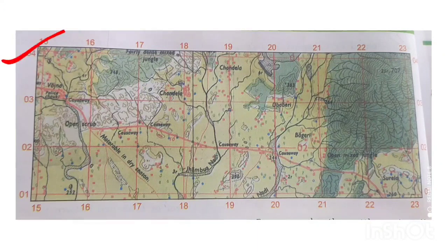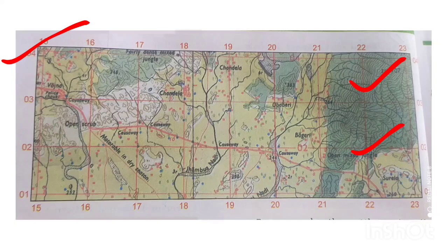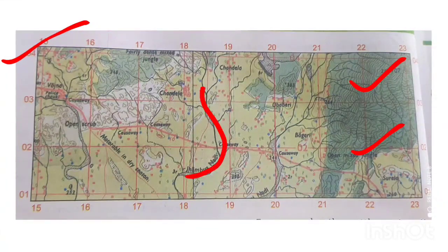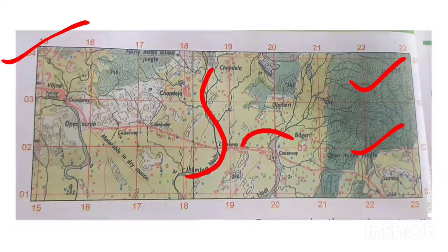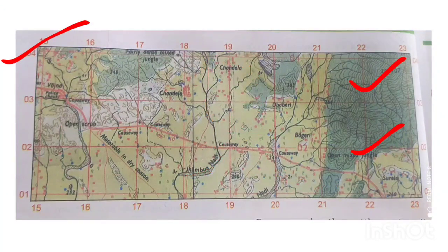On a topographical map, physical features are shown with contour lines, and green color represents vegetation. The Jamuna and other rivers are also physical features. In the case of human-made features, settlements and roads are shown — these are the human-made features.